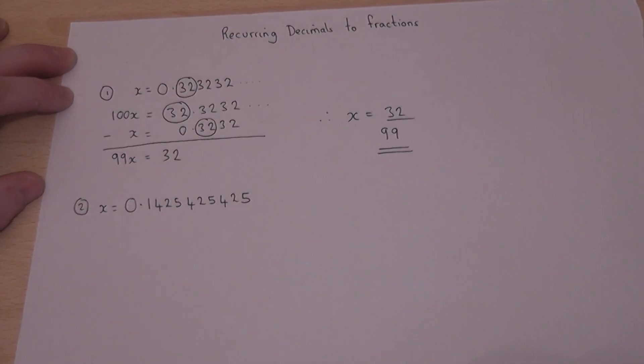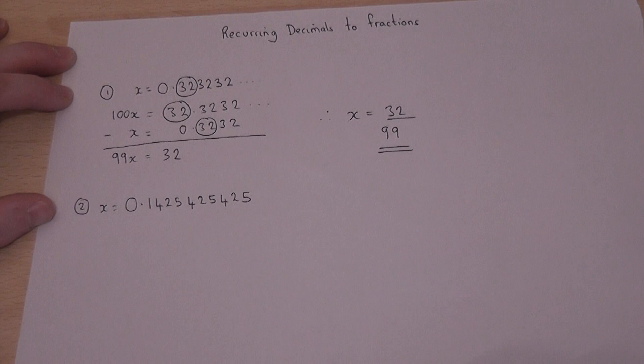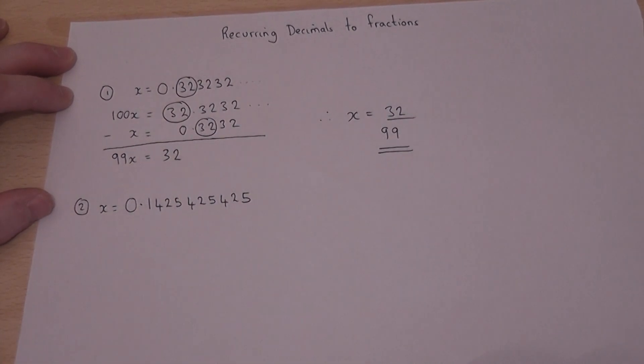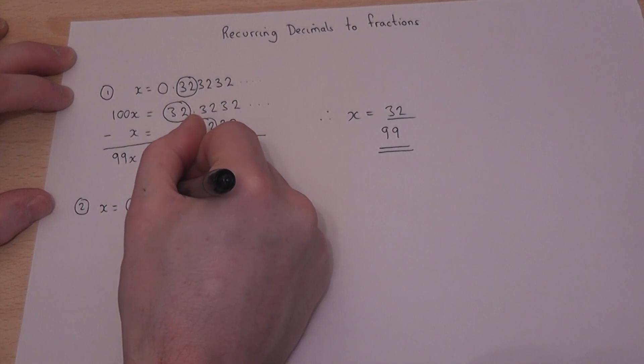So let's adapt this to a second, slightly trickier example. So step one is to look for the recurring part of the number, which in this case is 425.